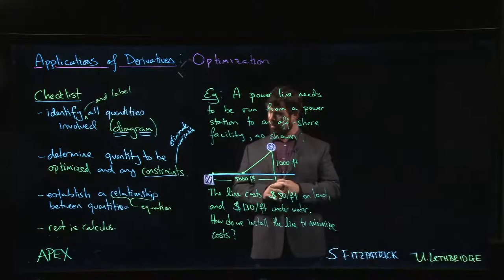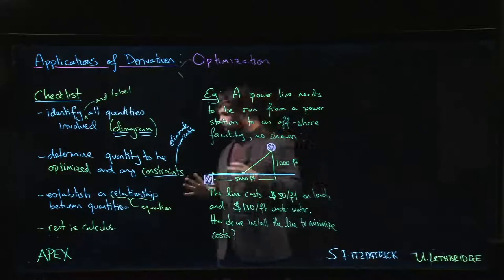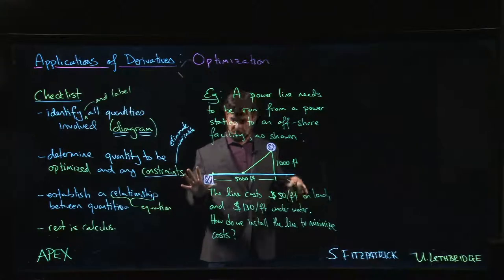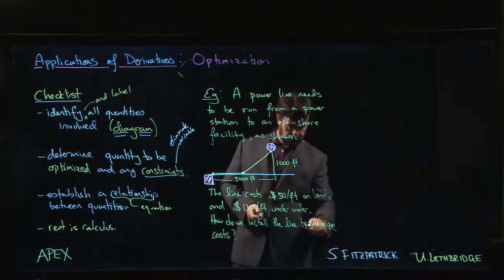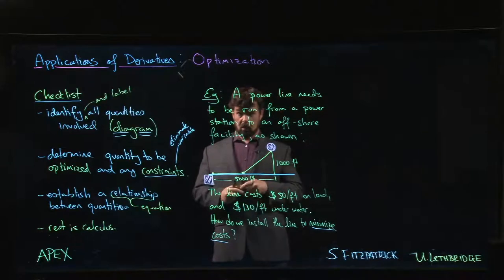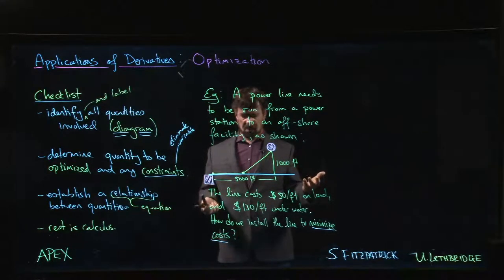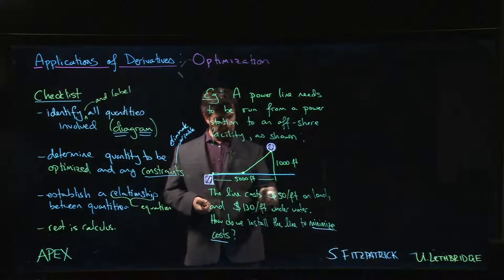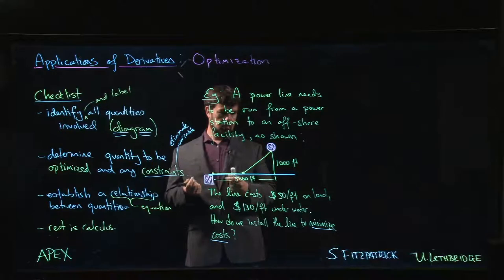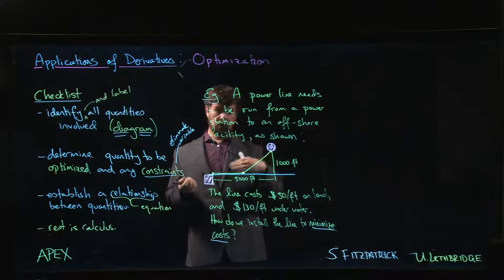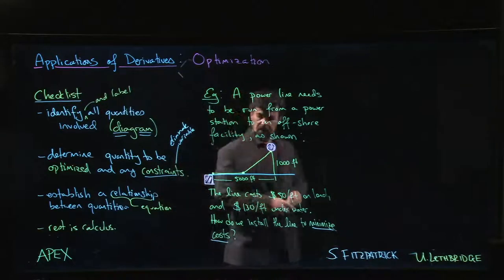We're going to look at a more challenging problem that shows up in a lot of different variations. The one we have here is we're trying to minimize the cost of installing a power line. The cost depends on whether you're installing it along the shore or under the water — it's much cheaper to install along the shore than to run it under the water.